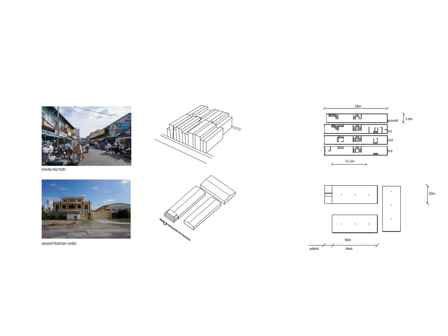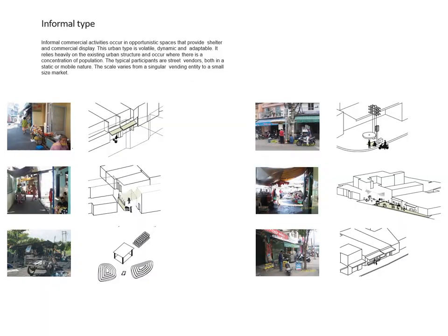The tube house typology can also be used for manufacturing. In one diagram, the administration front looks more like a residential building, but behind it is the shed typology. The informal type uses opportunistic spaces in between buildings, public laneways, and infrastructure created by other owners — intersections, shaded areas, and offset spaces from the street — to create markets, even using steps in front of another house to display goods.